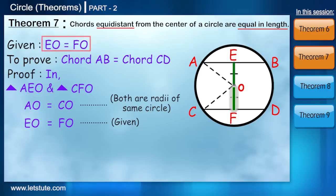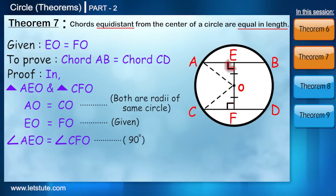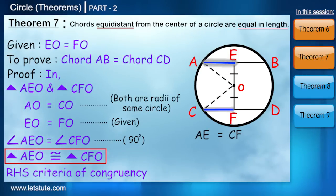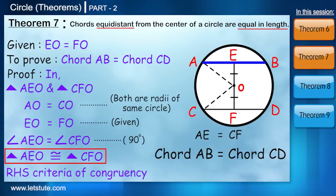EO is equal to FO because it is given. And angle AEO is equal to angle CFO because both are 90 degrees. Here again both the triangles are congruent by RHS criteria of congruency. So from this we can say that AE is equal to CF and from this we can say that chord AB is equal to chord CD. I believe now even before I start the theorem you must be already having an idea that how we are going to prove it.